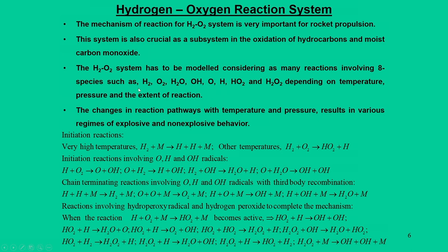In H₂-O₂ systems there are about 8 important species: hydrogen, oxygen, water, OH radical, oxygen atom, hydrogen atom, HO₂, and H₂O₂. HO₂ when formed is relatively friendly, but radicals like OH are chain initiating and chain propagating. These chain reactions keep on spreading when they get the required pressure and temperature environment, and the changes in reaction pathways as a function of temperature and pressure result in various regimes of explosive and non-explosive behavior.